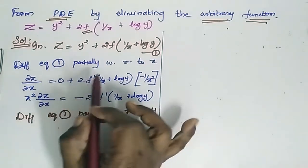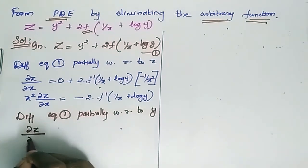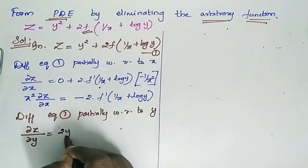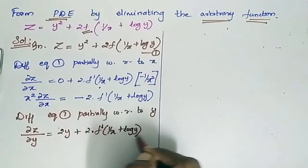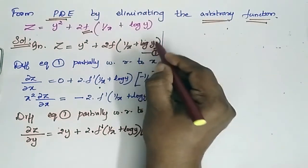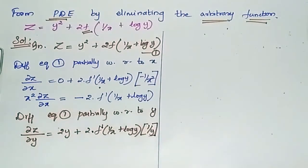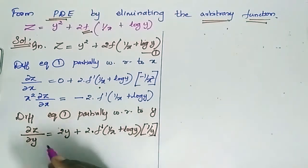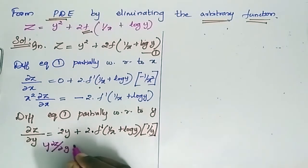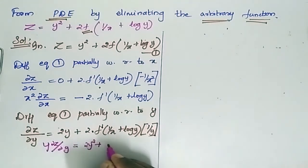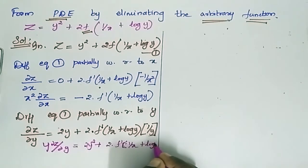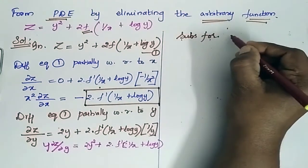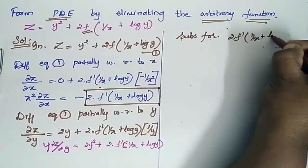Next, differentiate equation 1 partially with respect to y. So ∂z/∂y equals 2y plus 2 into f dash of (1/x + log y) into (1/y), since differentiating log y gives 1/y. Bringing y across, y into ∂z/∂y equals 2y squared plus 2 into f dash of (1/x + log y).